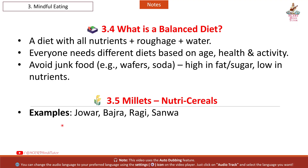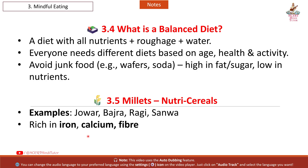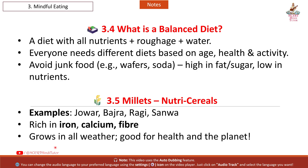Section 3.5: Millets – Nutri Cereals. Examples: Jowar, Bajra, Ragi, Sanwa. Rich in iron, calcium, and fiber. Grows in all weather and is good for health and the planet.